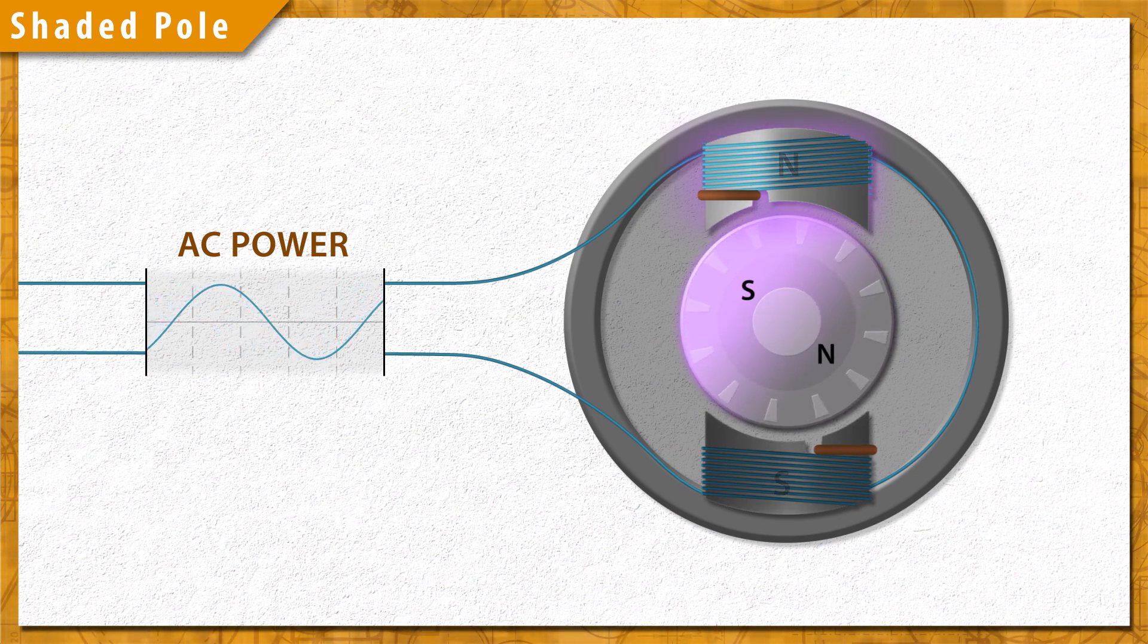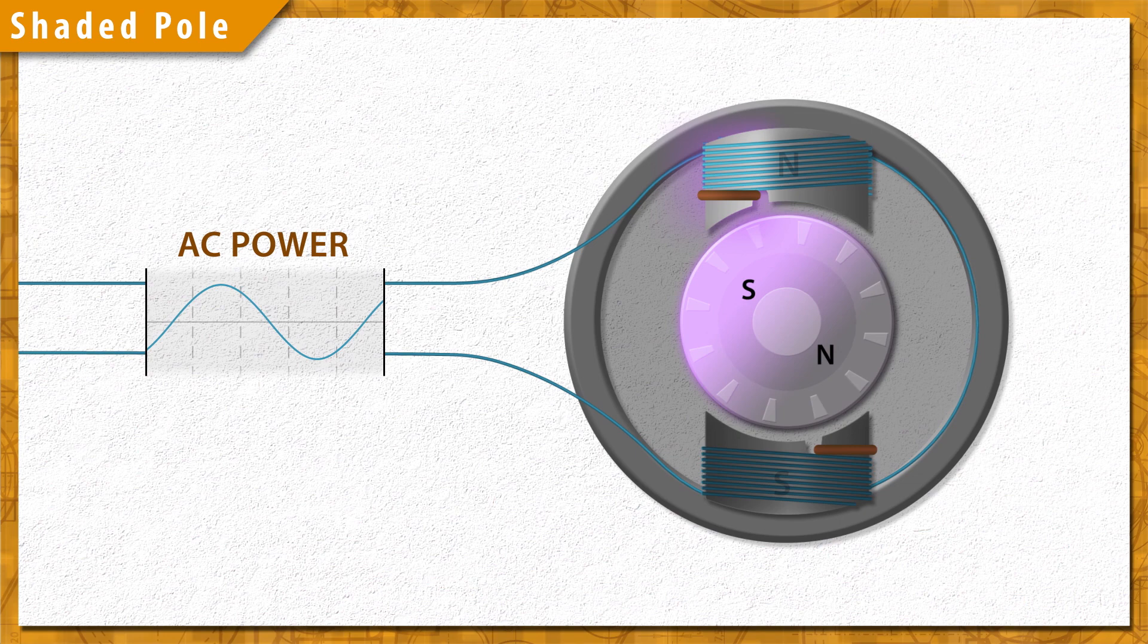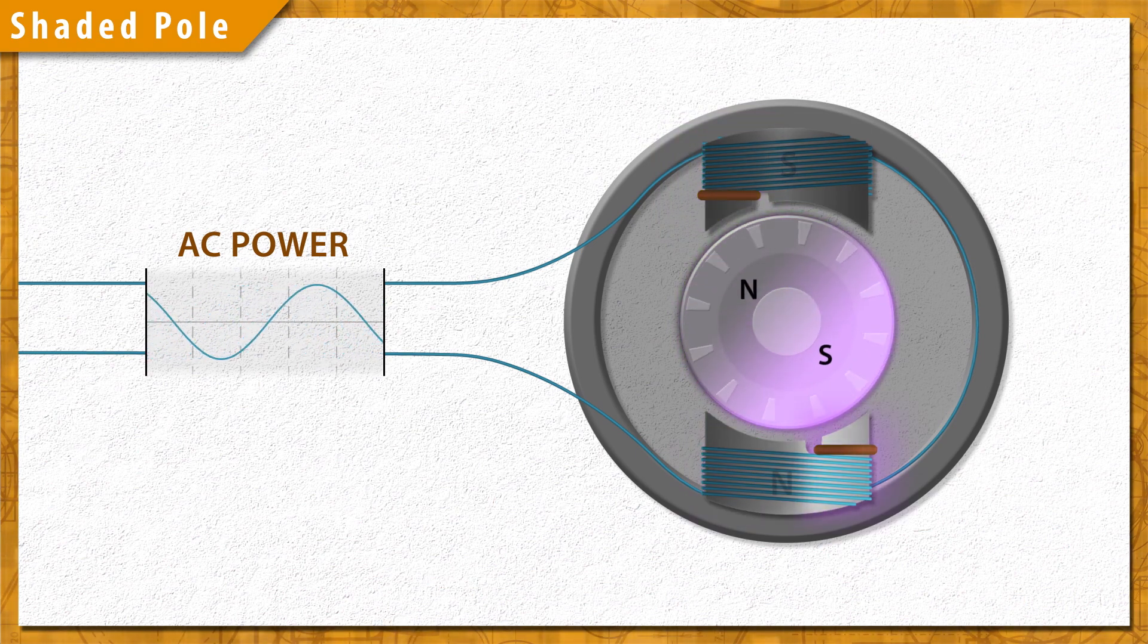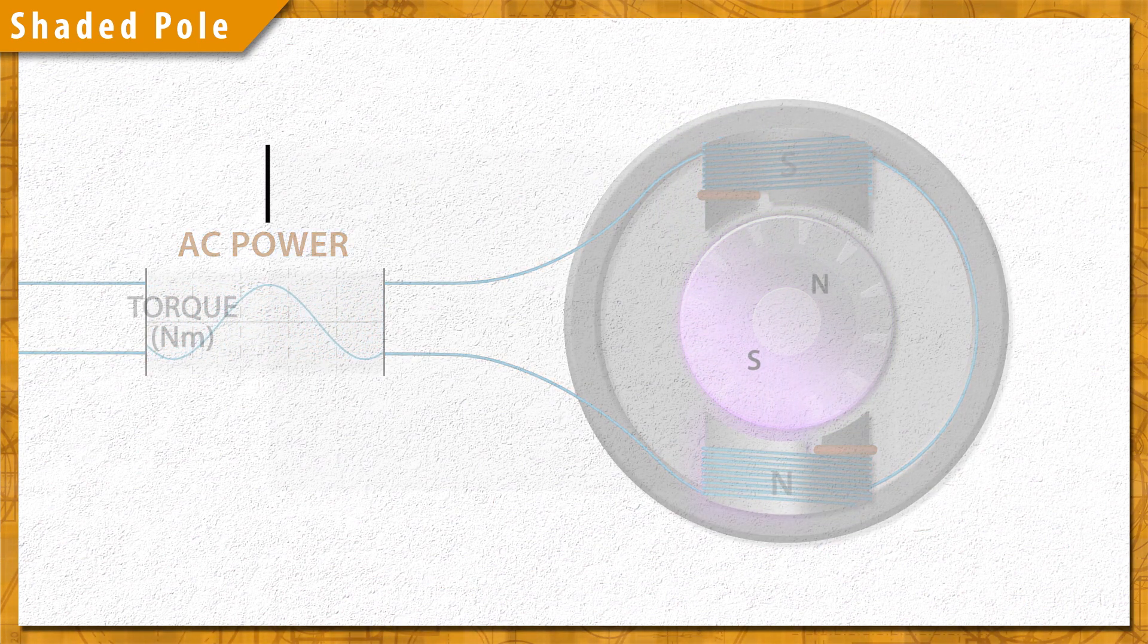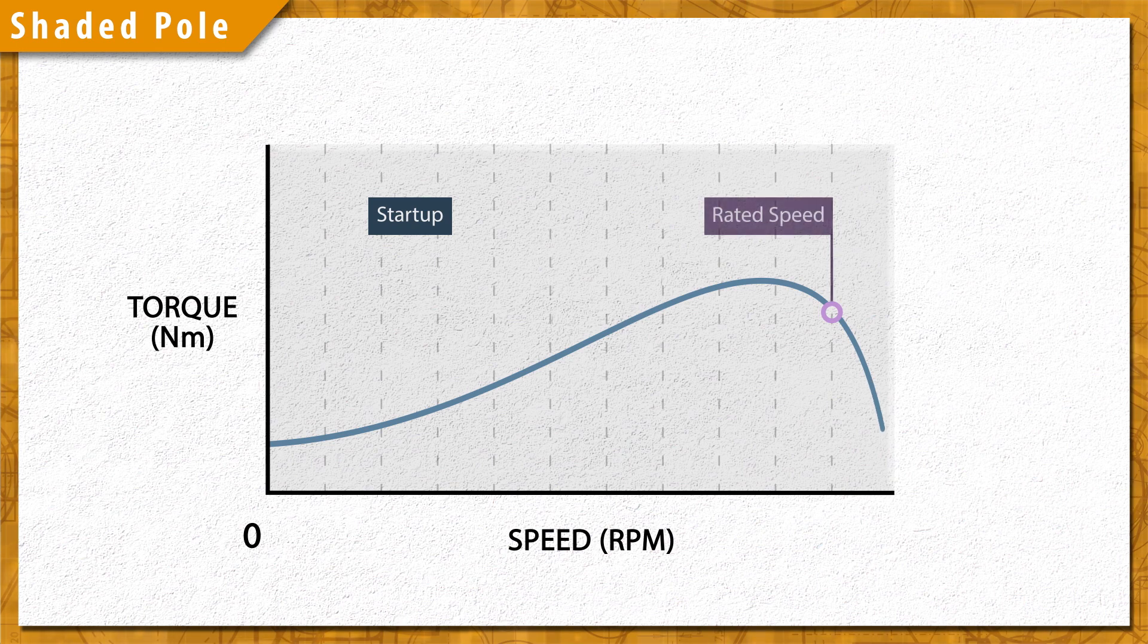This creates a weak rotating magnetic field, which moves from the unshaded to the shaded portion. These motors have low torque, and are only about 15 to 30% efficient. Generally, they will only be found in small motors under one quarter horsepower, like in blower fans and small appliances.